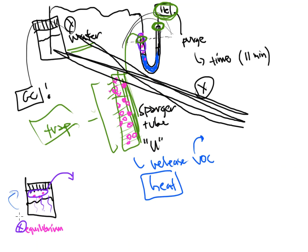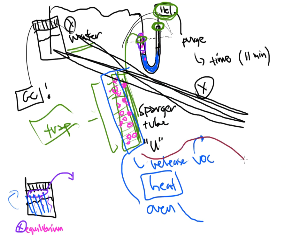They were already volatilizing naturally in the sample. I just helped this process along and pushed almost all of the sample out of the aqueous environment through this purge. Now that they're trapped, they're still volatile - nothing changes about their chemical or physical properties. So I apply a little heat to this column, meaning it has to be in an oven or heated chamber, and this tube will get heated to a temperature hot enough that these volatile organics start coming off the column.